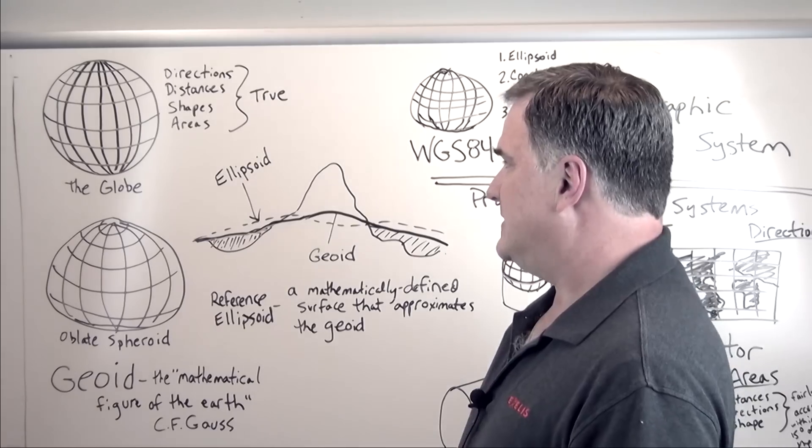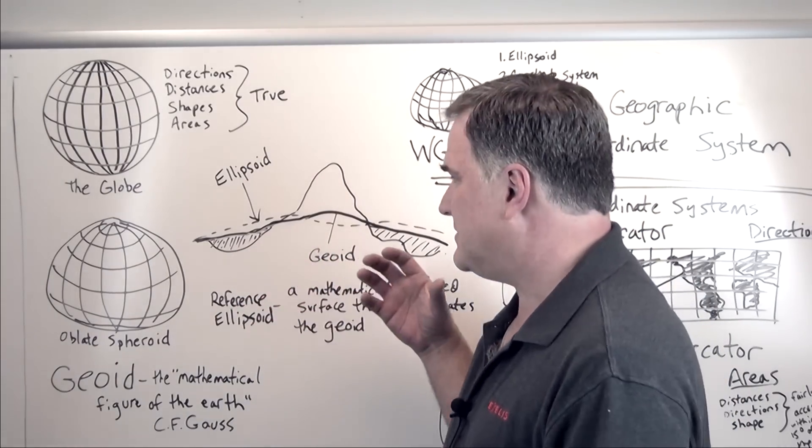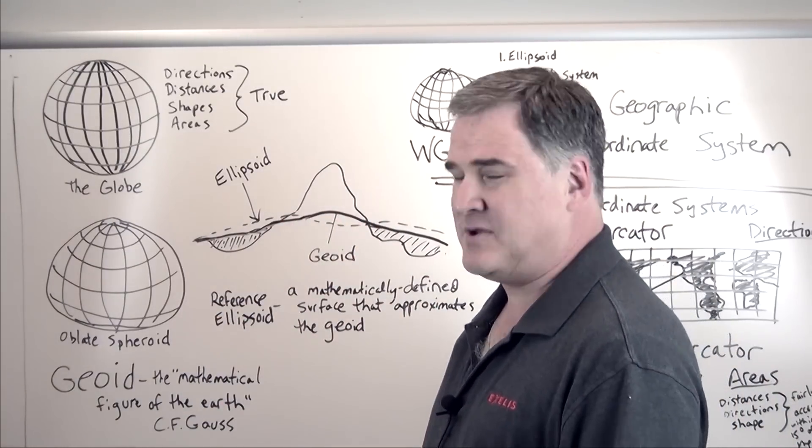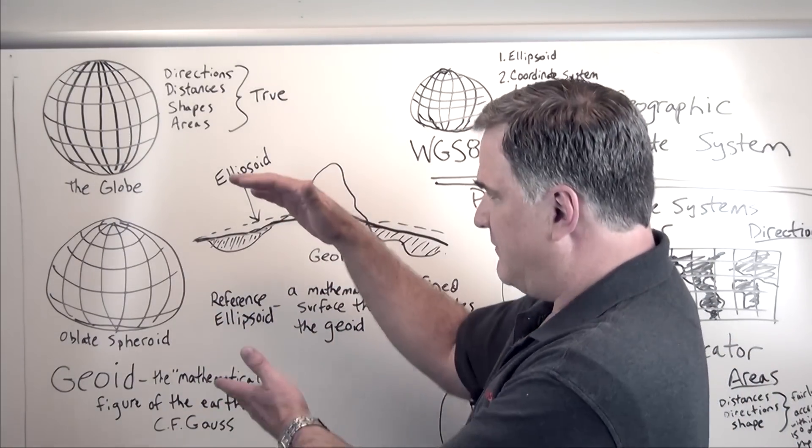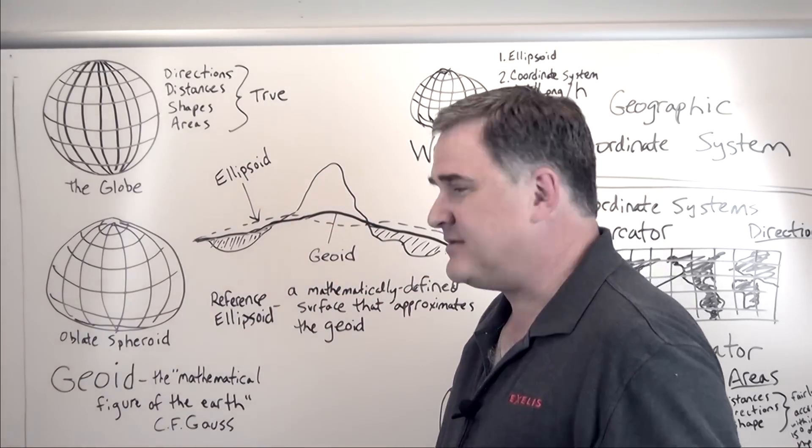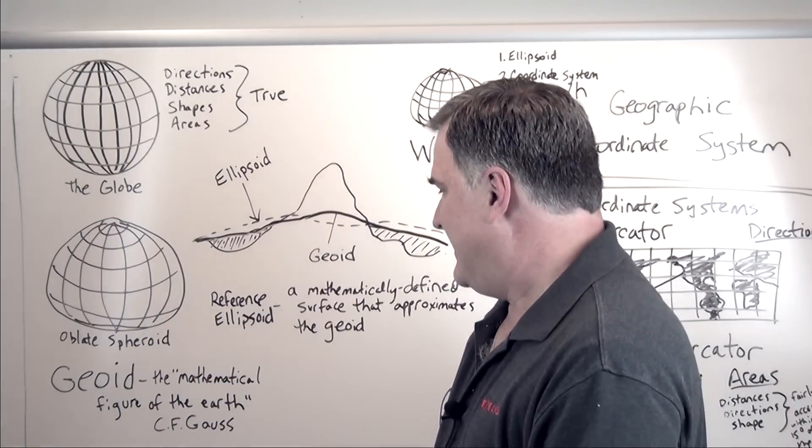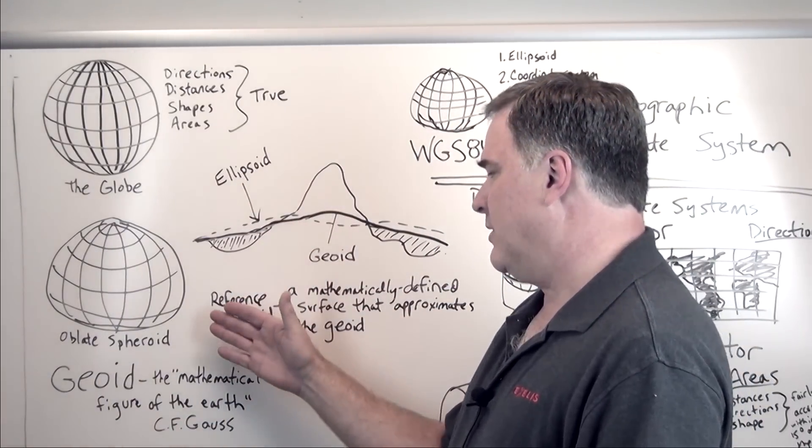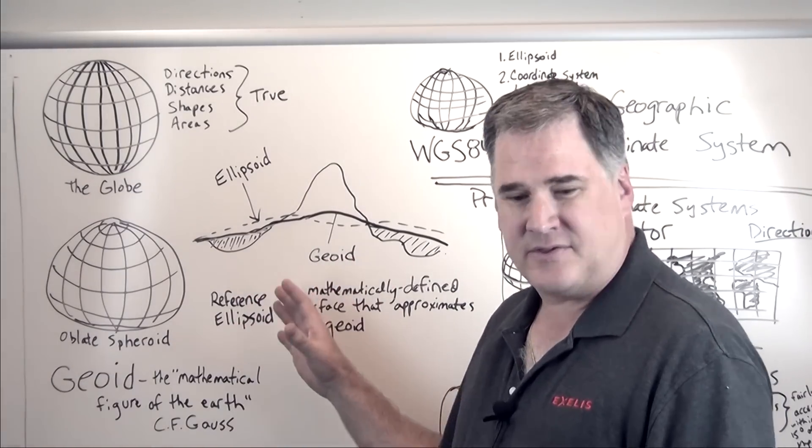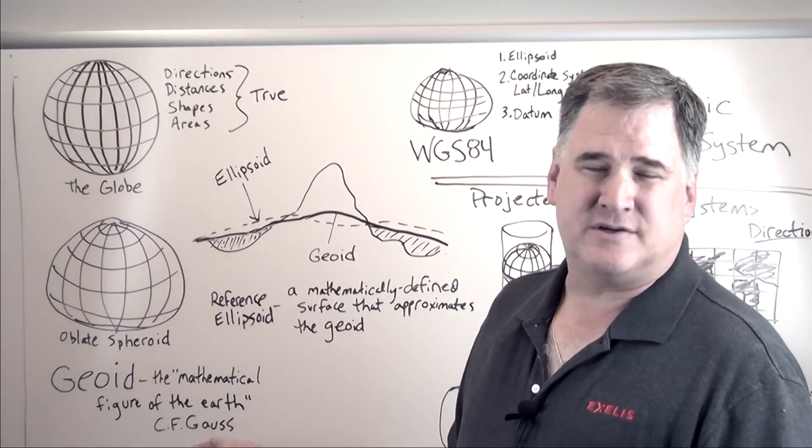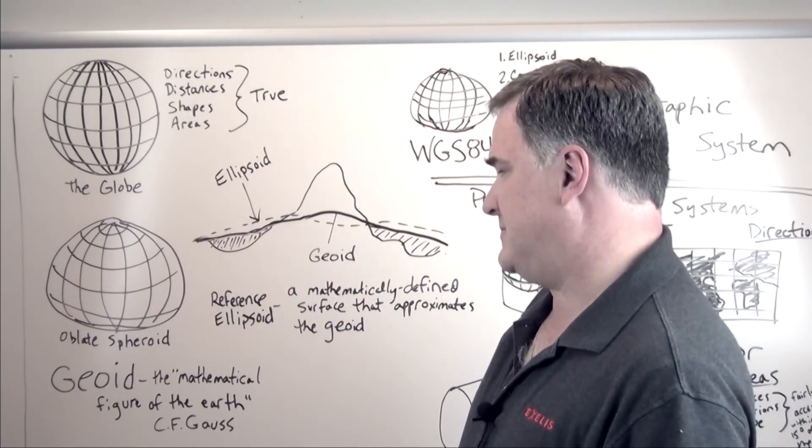When we talk about the shape of the earth, actually it's not a sphere, it's not a true globe. It's something that's termed an oblate spheroid. It's flattened at the poles, kind of squished in and bulges out at the equator. That's due to its rotation. Things like a globe or an oblate spheroid are smooth, but we also know that the earth, the surface of the earth isn't anything but smooth. It's got valleys, ridges, oceans, mountains.